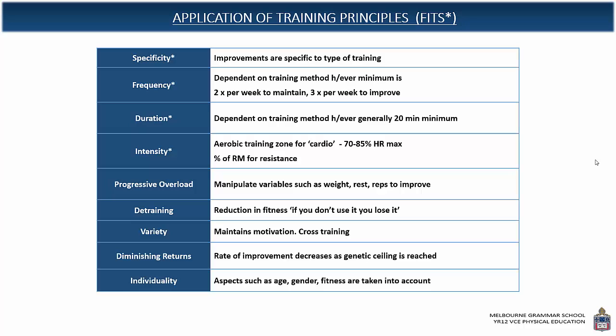Diminishing returns means that the closer you get to your capacity, the smaller the improvements. When you start out undertaking a training program, you tend to get improvements quite quickly. But as you get closer to what's called your genetic ceiling — your capacity in that particular fitness component — your improvements decrease and get smaller.